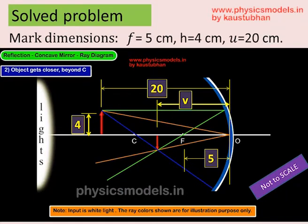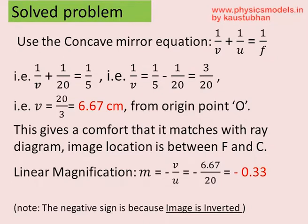Now we go forward and apply the equation. The mirror equation is 1 by V plus 1 by U equal to 1 by F. And we know U, we know F, so we can find out V as 6.67 centimeters. This is the distance from the origin point O.